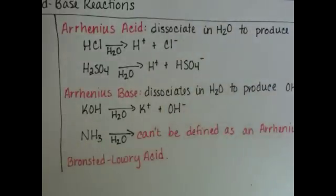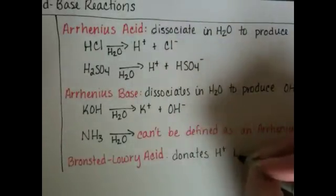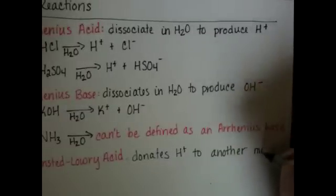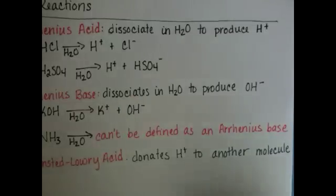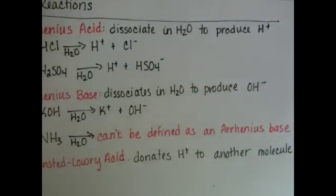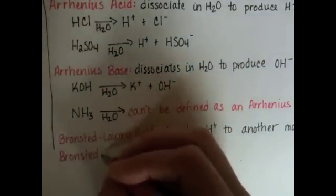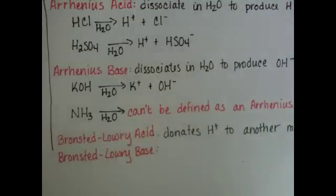The Bronsted-Lowry acid was defined as a substance that donates an H+ to another molecule. We're just going to say molecule, though it may not be going to a molecule. And the Bronsted-Lowry base was defined as a substance that accepts the H+ from another molecule.